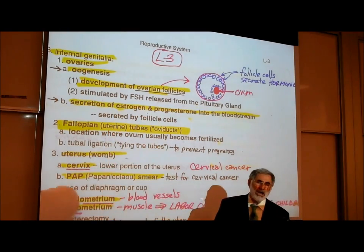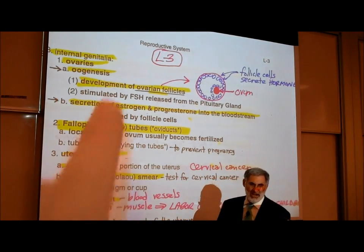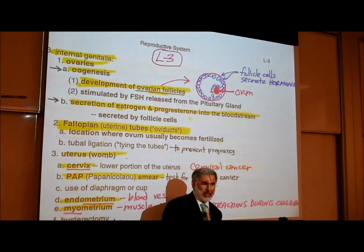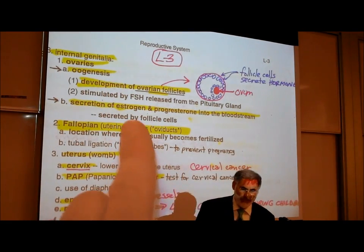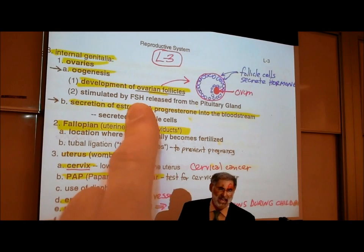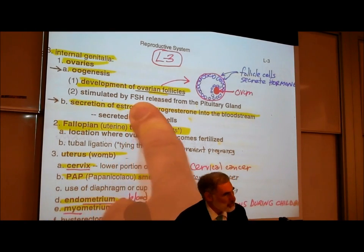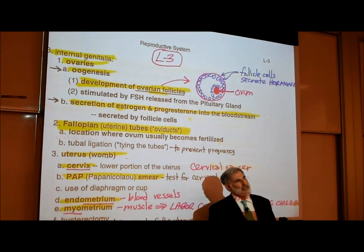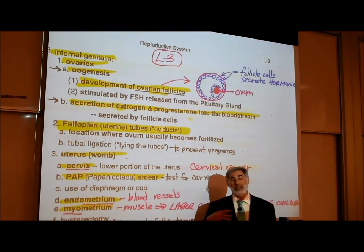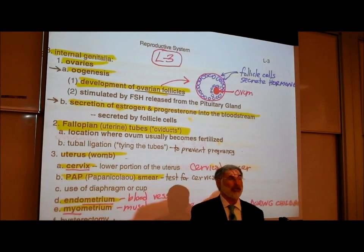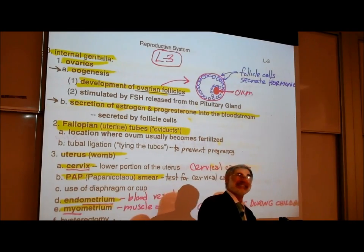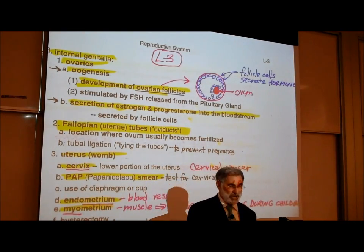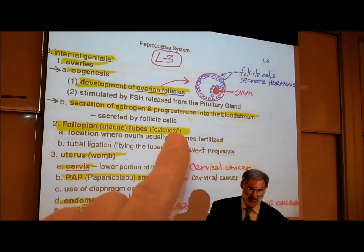What activates the development of these ovarian follicles is a hormone released from the pituitary gland called FSH — follicle-stimulating hormone. Without FSH, the ovaries do not develop an ovarian follicle. Just as we learned last time, FSH is what stimulates the production of sperm in the testes of a guy.